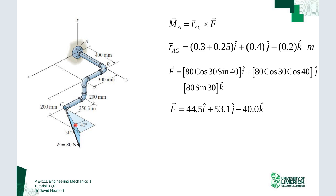I have 80 cosine gives me this component here, and then if I take that times the sine of 40, I get this portion here—that gives me the X component, the i-hat. If I do 80 cosine of 30 cosine of 40, I get this component here, and that is the j-hat component. So if I multiply those out, I get 44.5 i-hat plus 53.1 j-hat minus 40 k-hat Newtons.